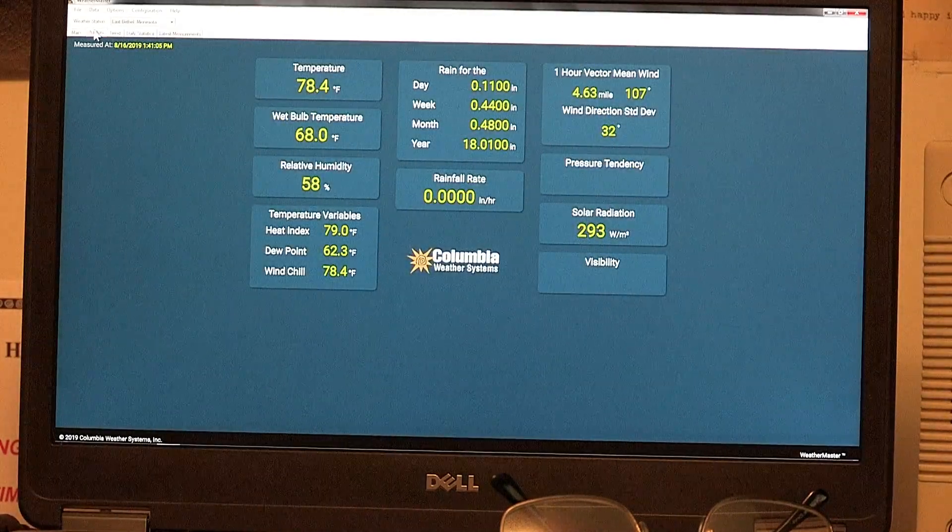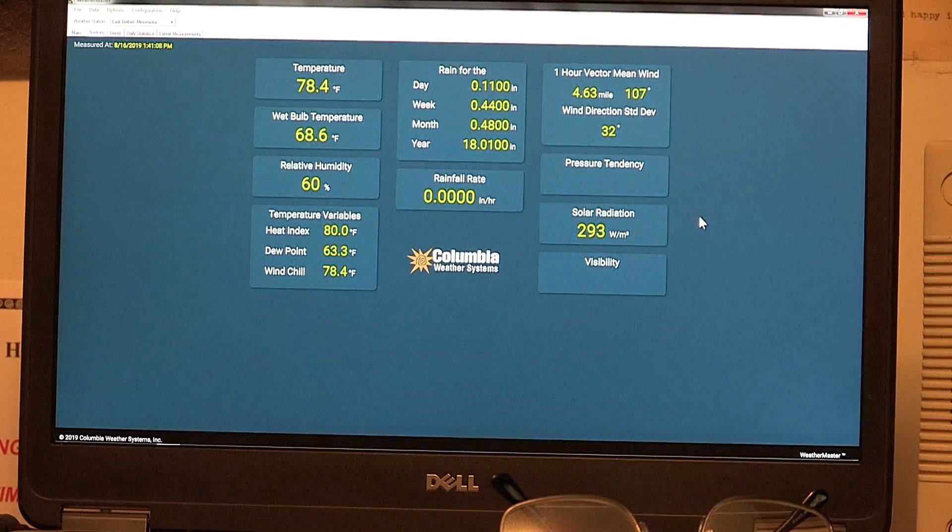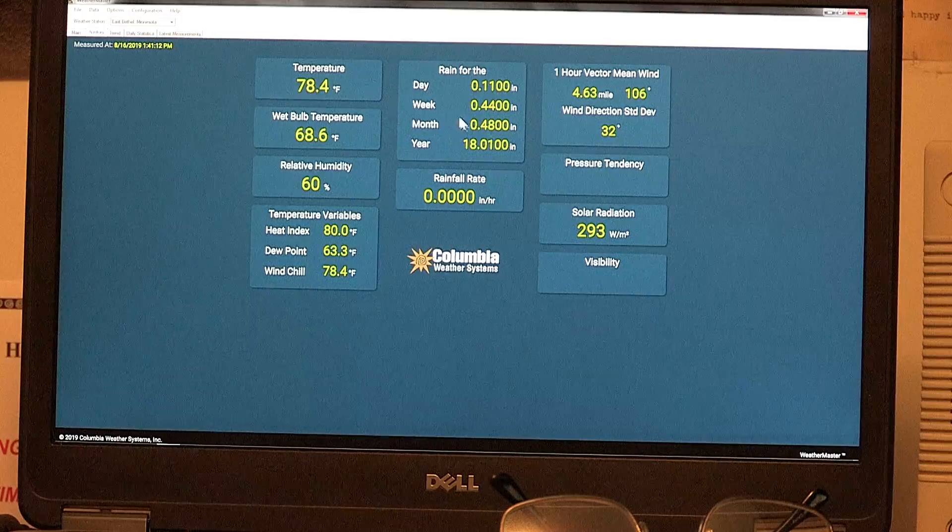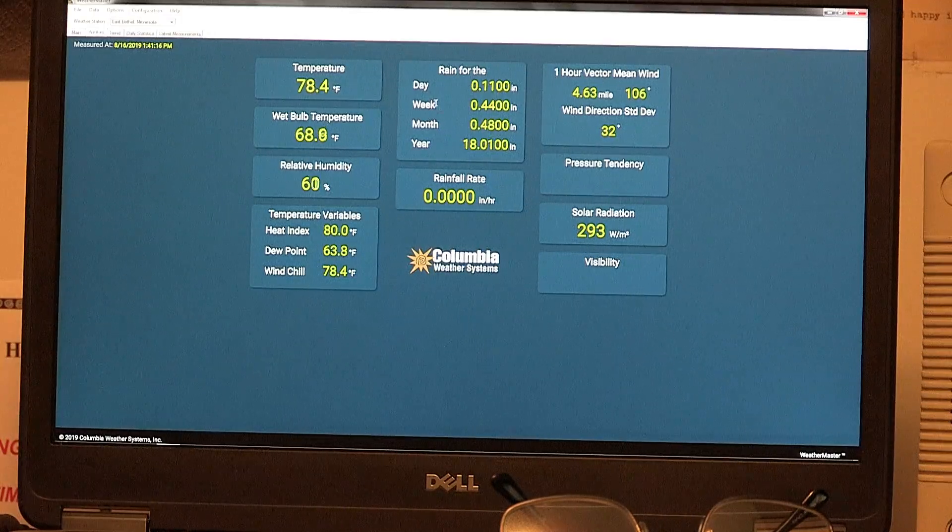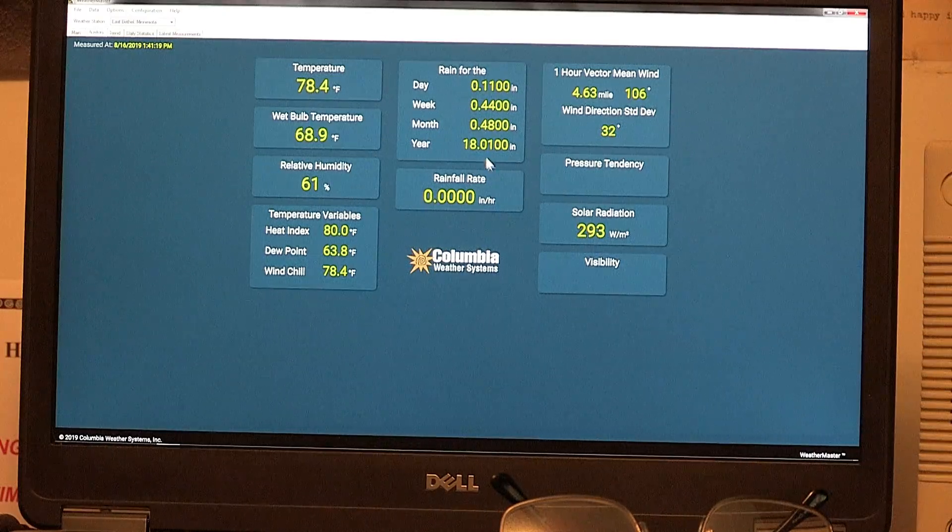And then we have auxiliary, which shows solar radiation. I do not have the solar radiation sensor, so you could ignore that. But it does list the rainfall for the week and the month and the total for the year.